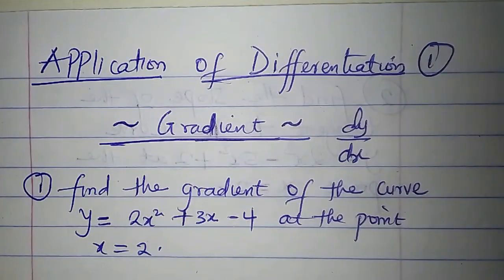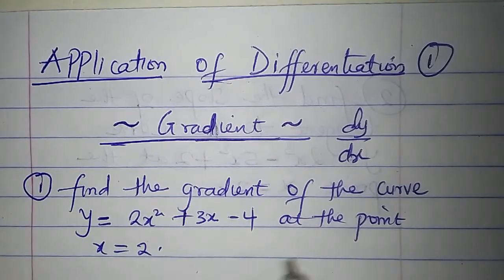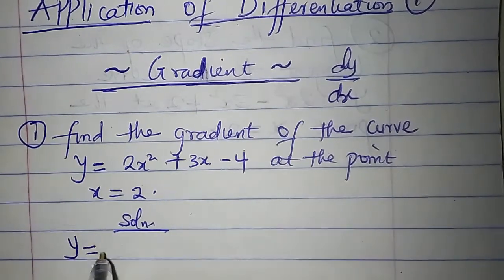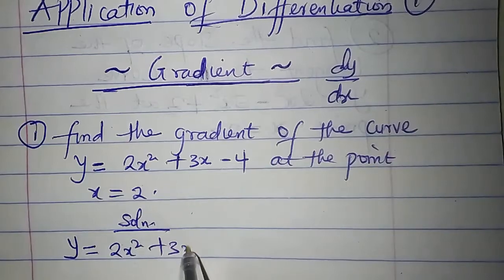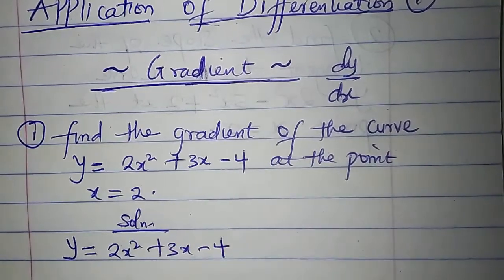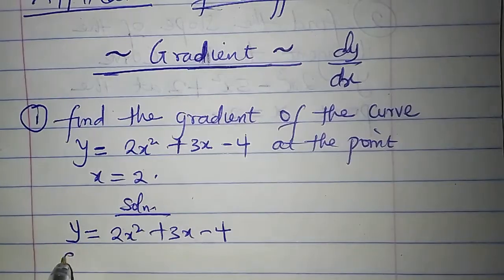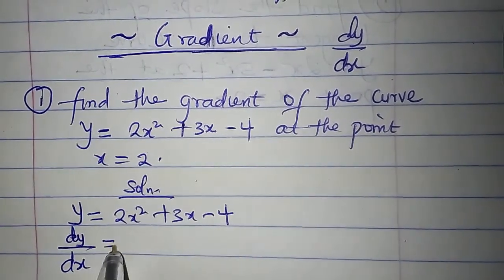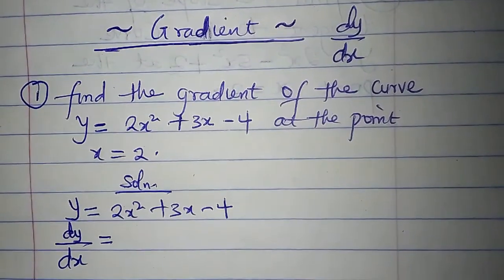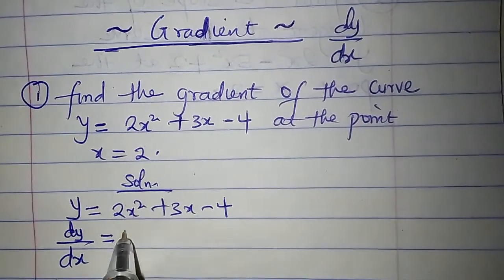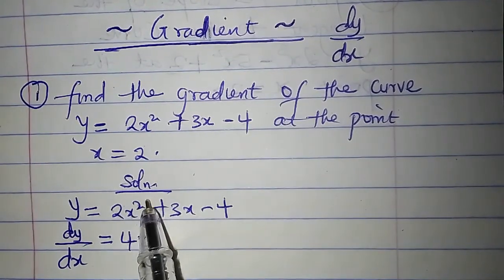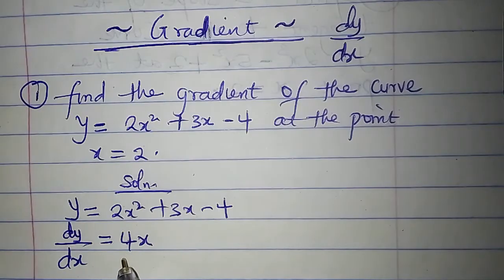I want to find the gradient of the curve y = 2x² + 3x - 4 at the point x = 2. We are given y = 2x² + 3x - 4. The gradient function of this curve is dy/dx, which means we are going to differentiate. Differentiate 2x² to get 4x — 2 times 2 is 4, and 2 minus 1 is 1, that's how we got 4x.